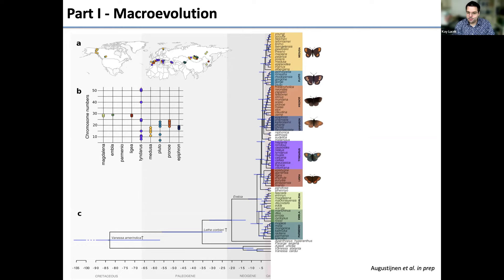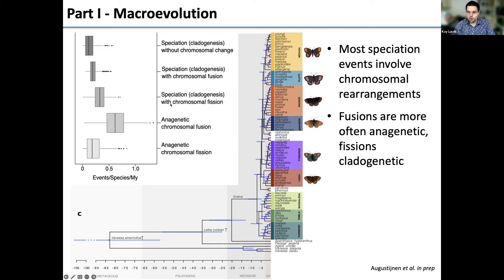Running ChromoSSC on the entire tree, most speciation events involve chromosomal rearrangements. The speciation rate without chromosomal change is clearly lower than with cladogenetic fission, cladogenetic fusion, or anagenetic fusion. Interestingly, fusions are more often anagenetic, while fissions more often result in cladogenetic changes — this holds across the entire genus.